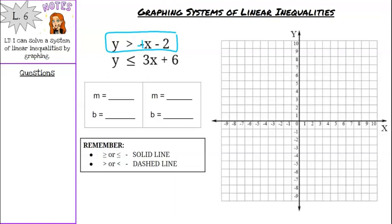Our m is negative 1, written as negative 1 over 1, and our b is negative 2. We're going to graph that — we should be really good at this by now. Start at negative 2, go down 1 over 1 using that slope, and fill up the entire graph with the line. Once we run out of space, flip from down-right to the opposite direction: up and left.